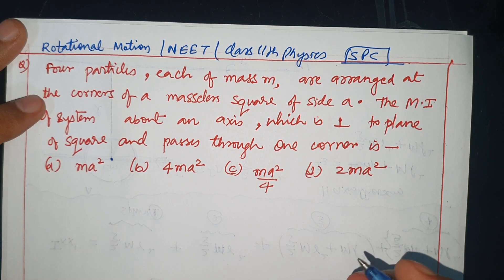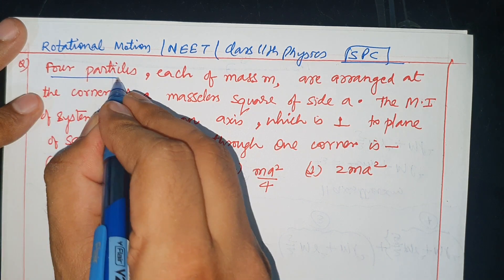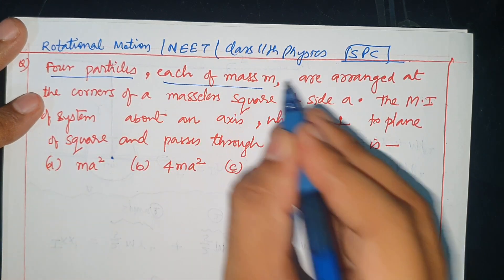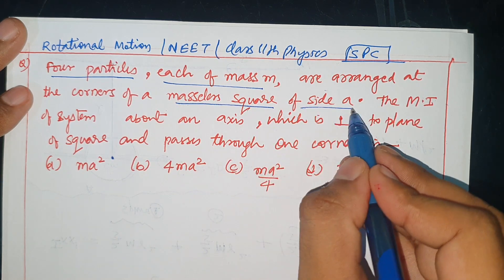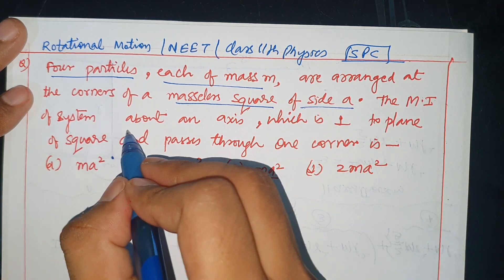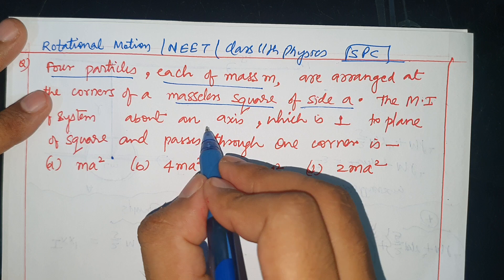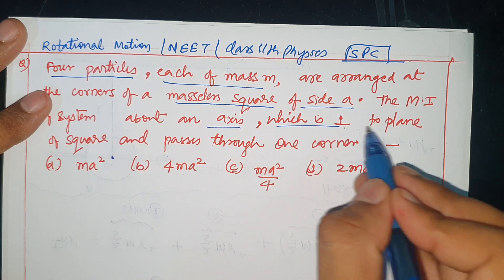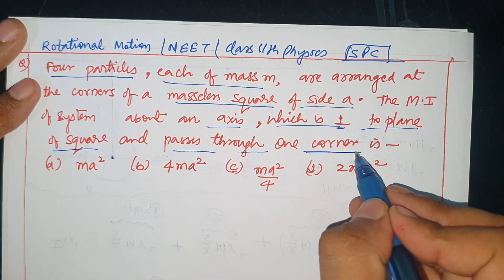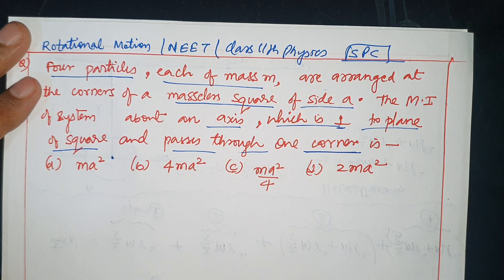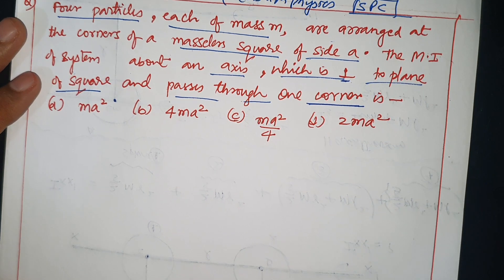Hello dear students, welcome back to my channel Physics SPC. Rotational motion question: Four particles, each of mass m, are arranged at the corners of a massless square of side a. The moment of inertia of the system about an axis which is perpendicular to the plane of the square and passes through one corner.